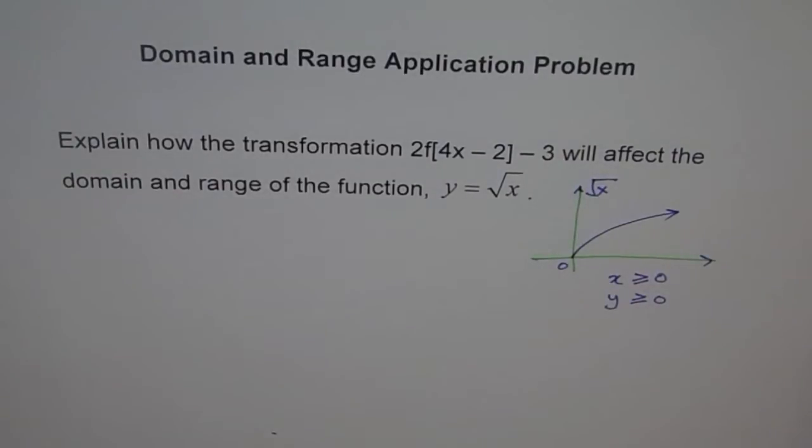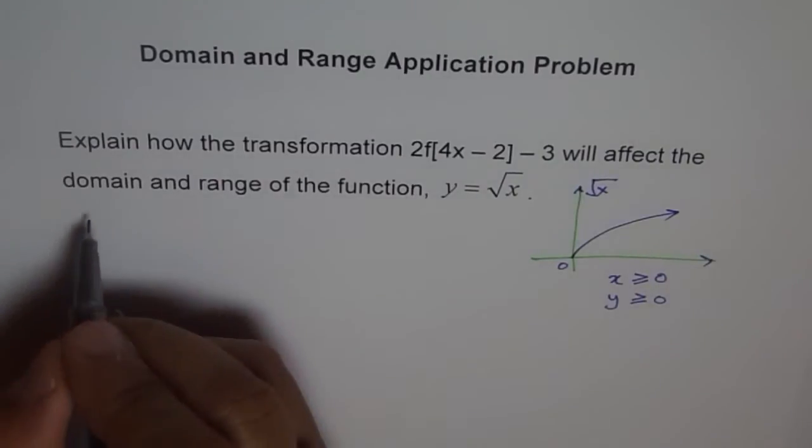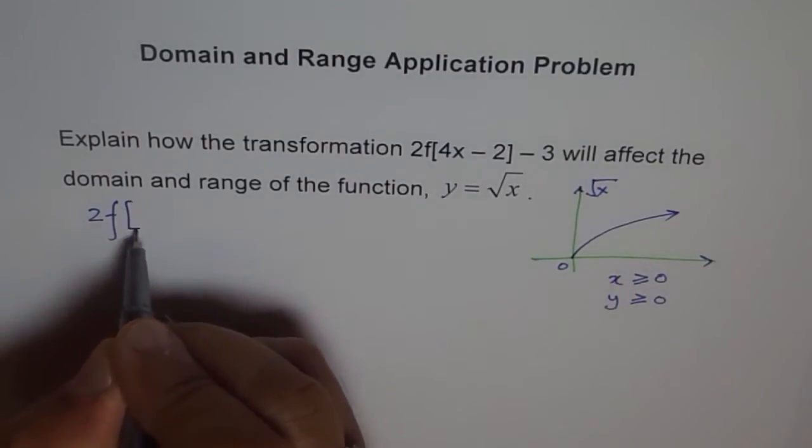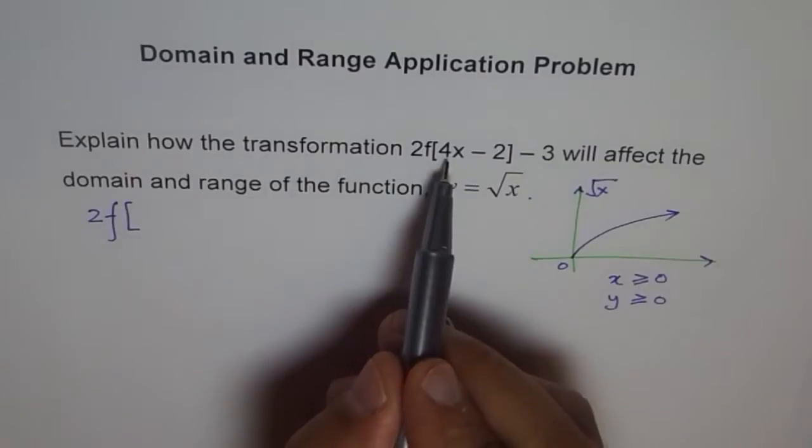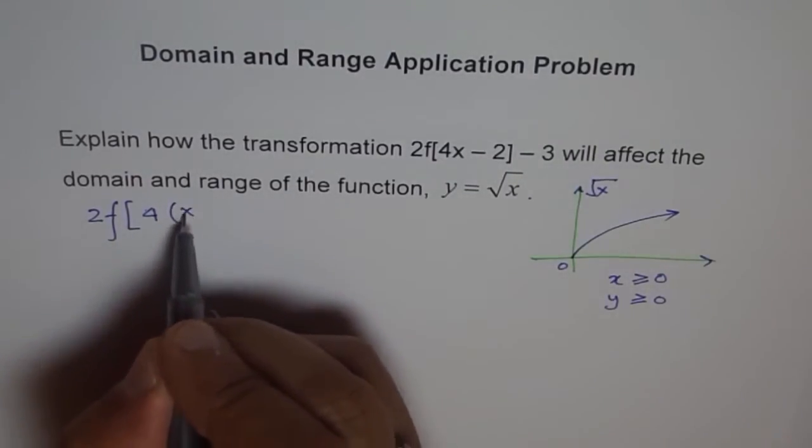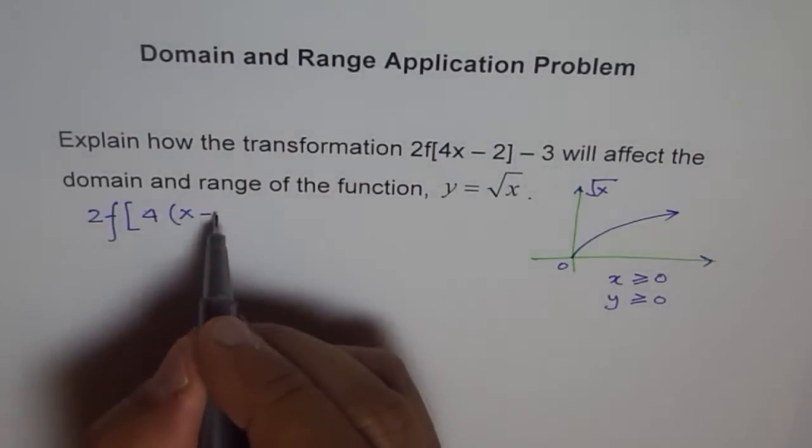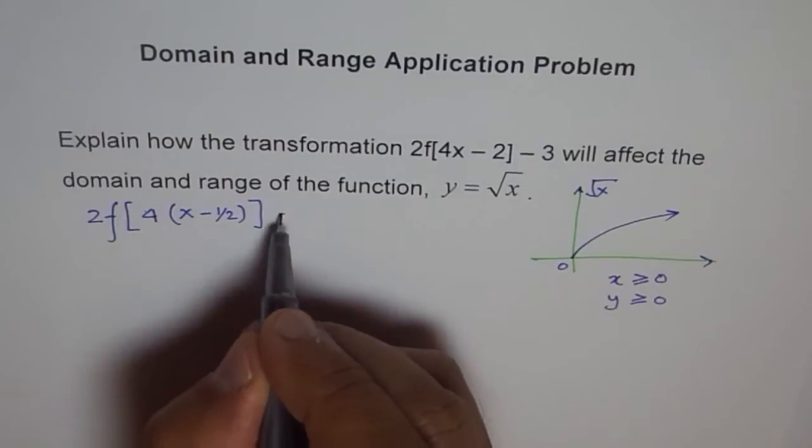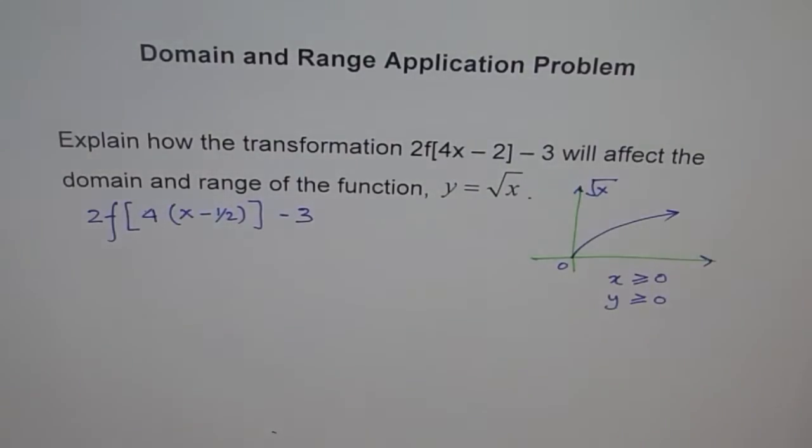Now, what we are given here is a function transformation. We should actually write this in a simpler form, the form which we are more conversant with. We need to factor out this 4. So we get 4 here and then we get x minus 2 divided by 4 is half. And then minus 3. That is the transformation applied.